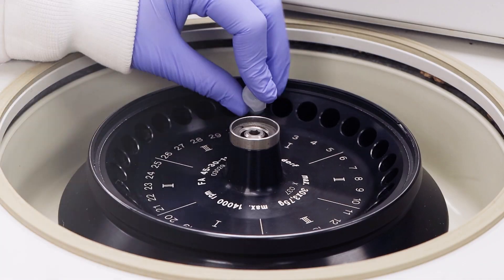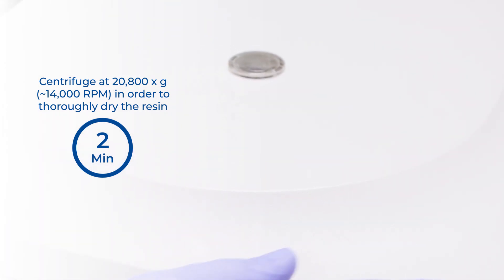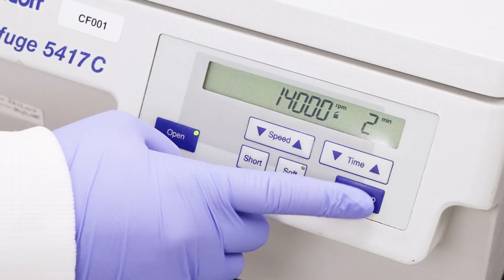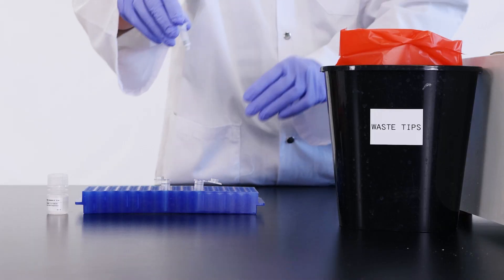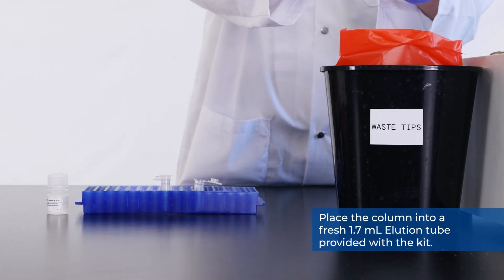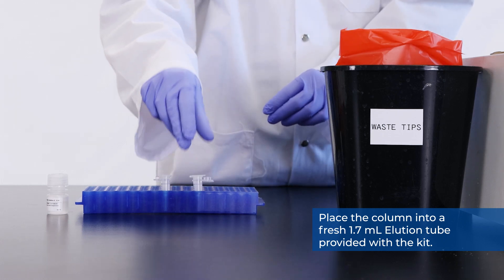For a total of 3 washes. Spin the column empty for 2 minutes in order to thoroughly dry the resin. Discard the collection tube. Place the column after being dried into a fresh 1.7 milliliter elution tube provided with the kit.